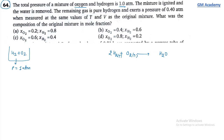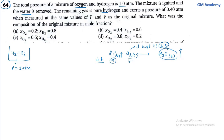The remaining gas is pure hydrogen, meaning O₂ is the limiting reagent and completely consumed. Let H₂ = A mol and O₂ = B mol. O₂ consumed = B mol; H₂ consumed = 2B mol. Final H₂ moles = A - 2B.